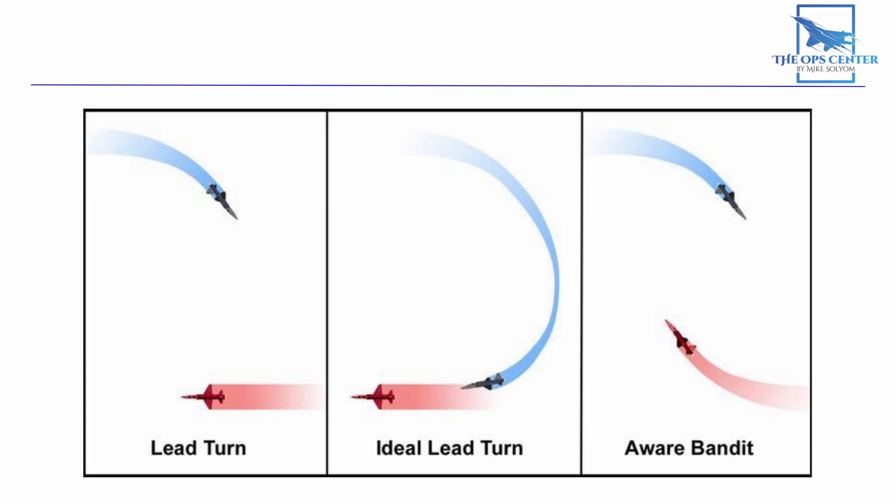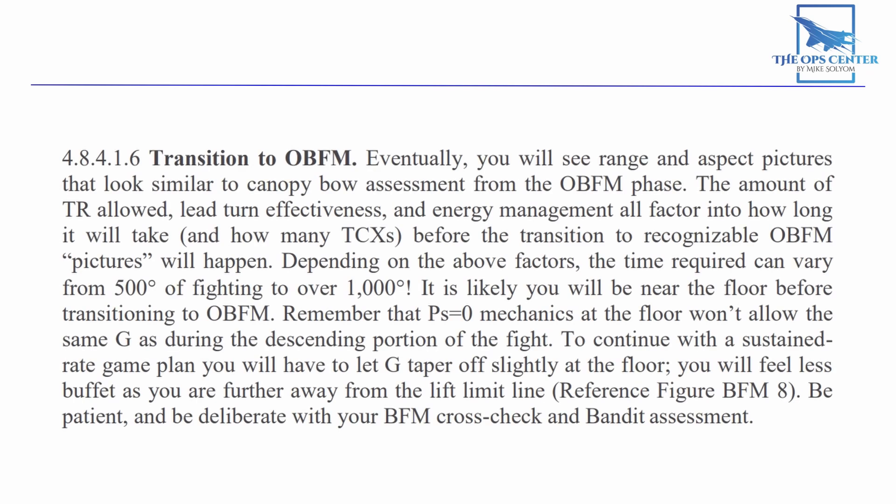Getting it right takes a lot of practice, and even with experience, you shouldn't expect to get lined up with just one TCX. The manual says time required can vary from 500 degrees of fighting to over 1,000. That's about three times around the circle.